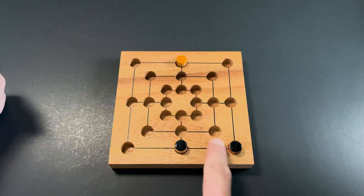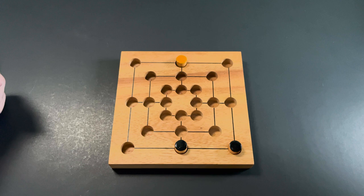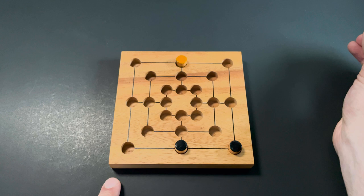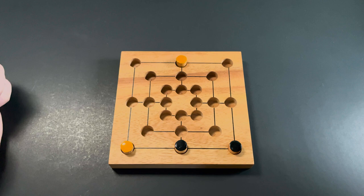So my opponent's turn is right now and they can make a decision. They have a decision to make whether to block me from building a mill here or to try and form a mill of their own here. So let's say they're blocking me right now and we keep on going and we keep on playing like this.